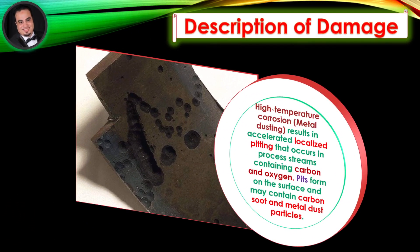Description of damage: High temperature corrosion — metal dusting — results in accelerated localized pitting that occurs in process streams containing carbon and oxygen. Pits form on the surface and may contain carbon soot and metal dust particles.